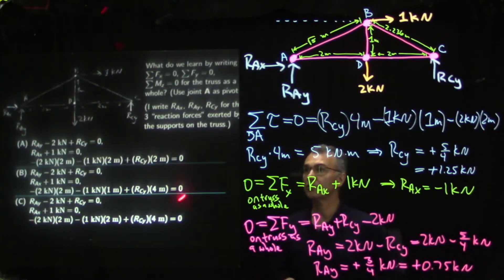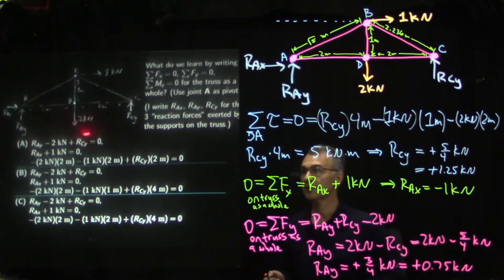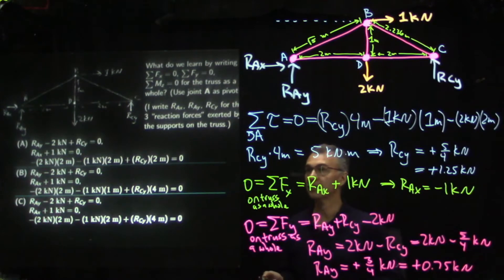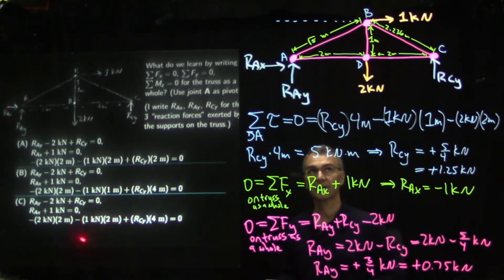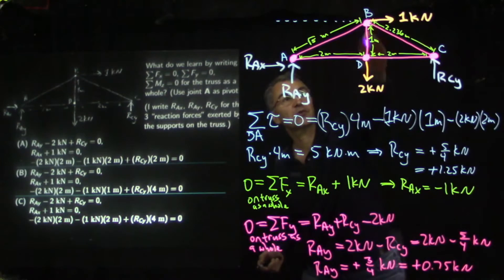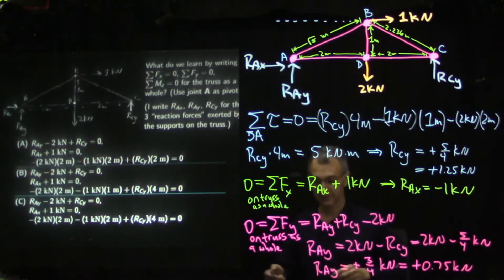Comparing with the candidate answers: for forces in Y, we got R-A-Y plus R-C-Y minus 2 kilonewtons equals zero. For forces in X, R-A-X plus 1 kilonewton equals zero. The torque equation is: minus 2 kilonewtons times 2 meters minus 1 kilonewton times 1 meter plus R-C-Y times 4 meters equals zero. The one kilonewton force has a one-meter lever arm, not two meters, because it's horizontal so we want the vertical displacement. I like answer B.